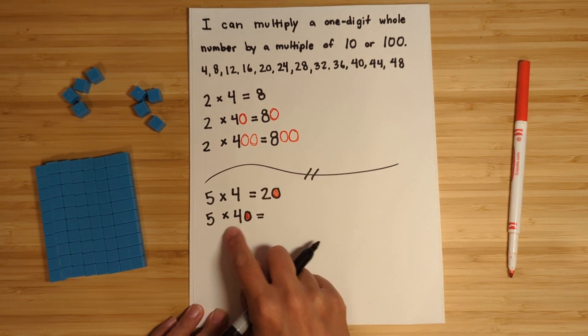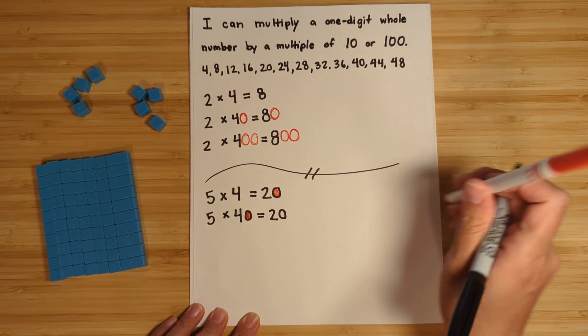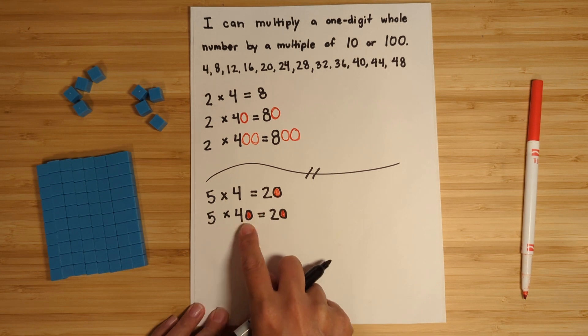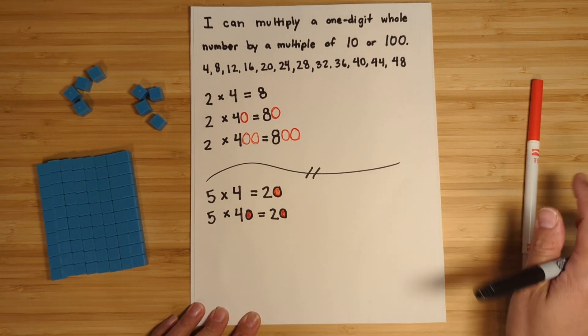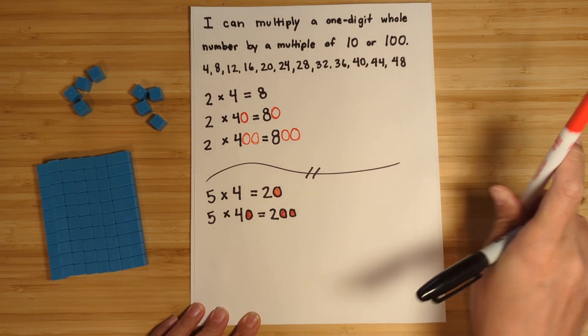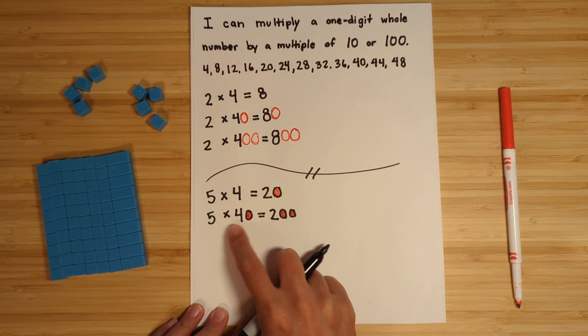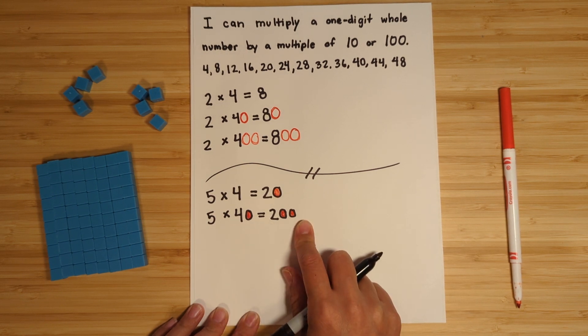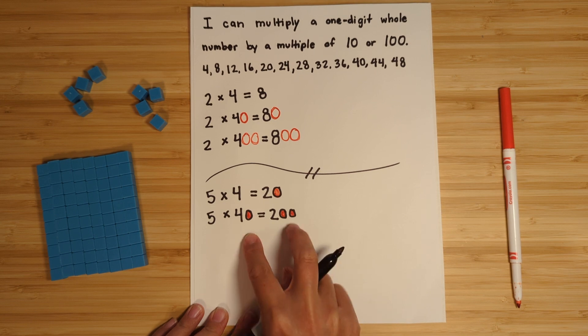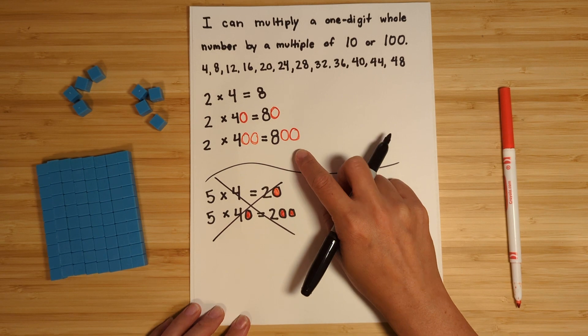Well, that doesn't make any sense, right? Because five times four is 20, not five times 40. So you can't just rely on the zeros trick. You really have to know your multiples and be able to skip count and just think logically, right? So five times 40, five groups of 40 is 200, right here. It is not 20. So don't rely on the zeros trick. Use your math sense.